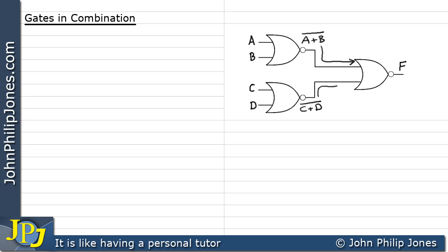The first NOR gate's output is the input to the final NOR gate, and the second NOR gate's output goes to the other input of the same gate. So F equals: the first input is NOT(A or B), in brackets, ORed with the second input, NOT(C or D), in brackets. We OR both inputs together and place a NOT across the top.